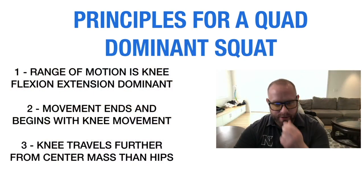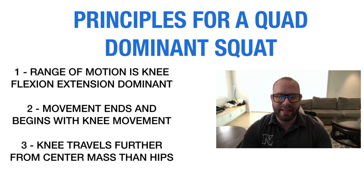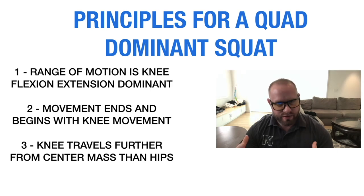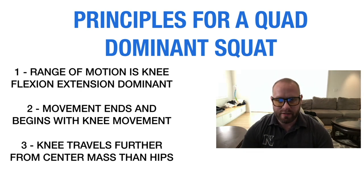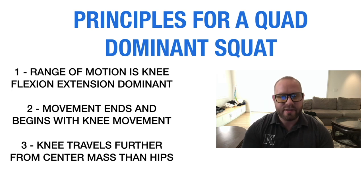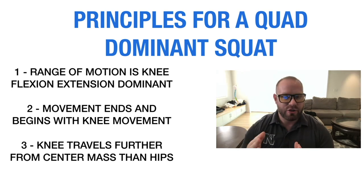The first principle is that the range of motion needs to come from knee flexion and extension. We're working the quads, which go around the knee, so our goal is that throughout the entire range of motion there is knee flexion and knee extension as the dominant movement. From the top down, the knee bend initiates the movement, and knee extension initiates the concentric coming out of the bottom.